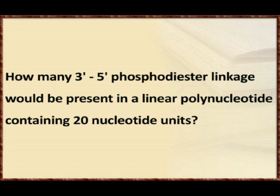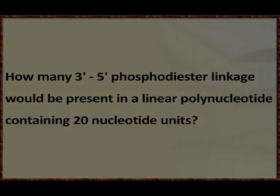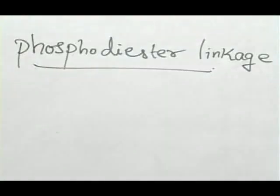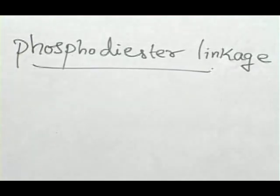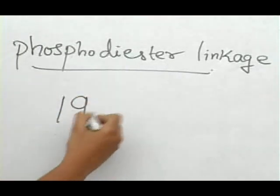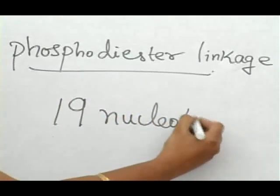Just like two acid molecules — if you remove water molecules you get only one structure — similarly, this phosphodiester linkage connects two nucleotides next to each other. Since there are 20 nucleotides, you will get 19 linkages, because it is always one less. So the answer is 19 phosphodiester linkages.